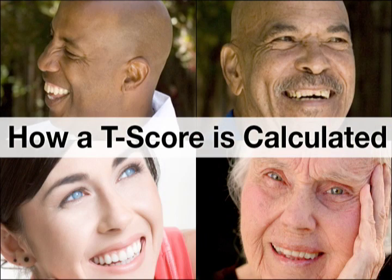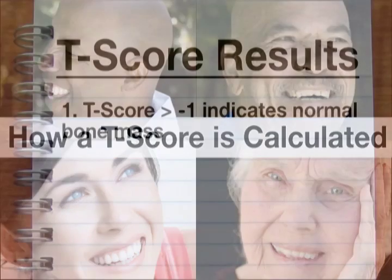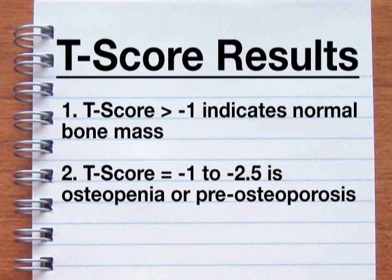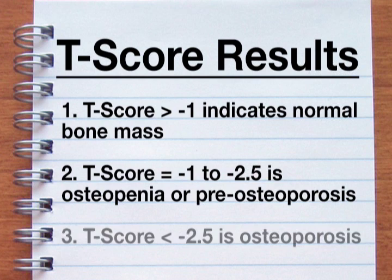This comparison is written as a negative number called a T-score. A T-score greater than negative 1 is normal. A score between negative 1 and negative 2.5 is classified as osteopenia, while osteoporosis is a number less than negative 2.5.